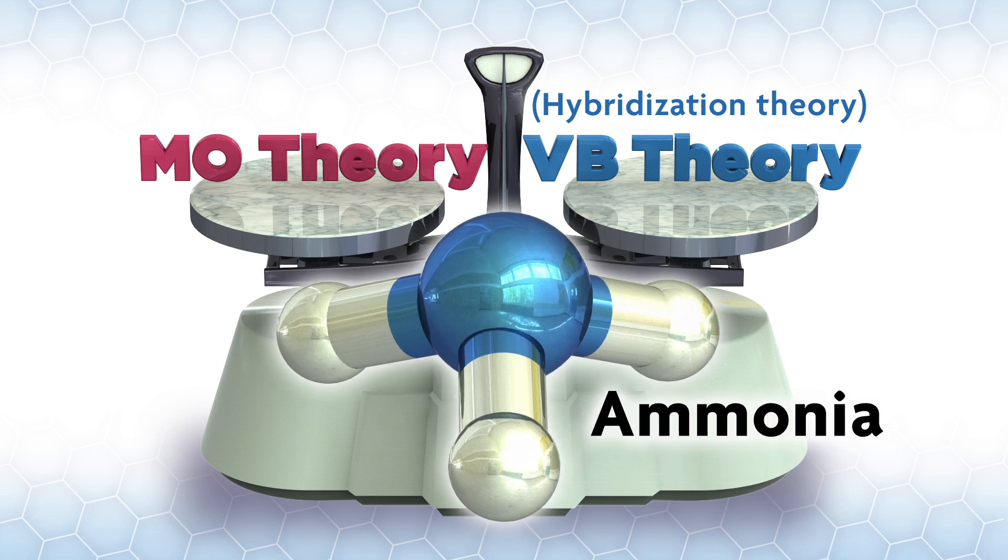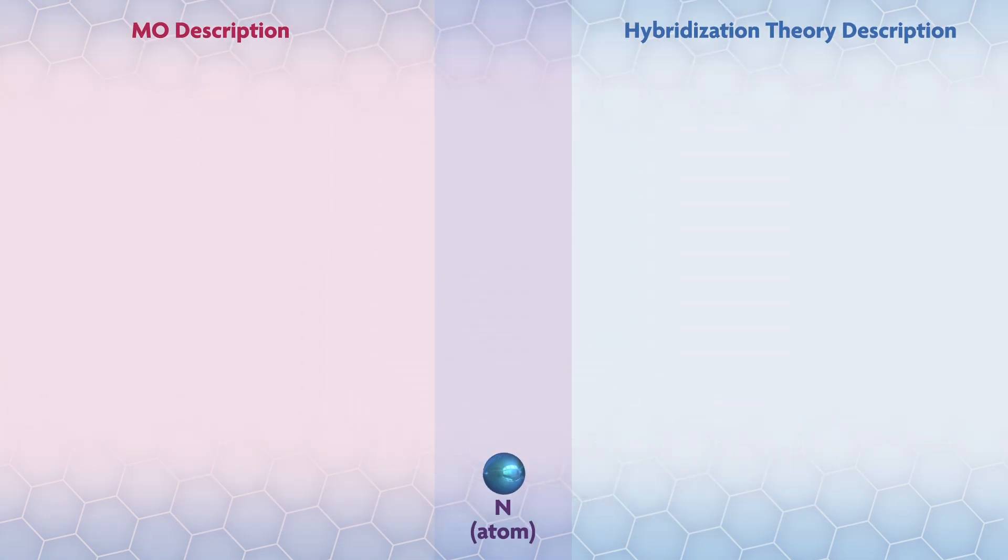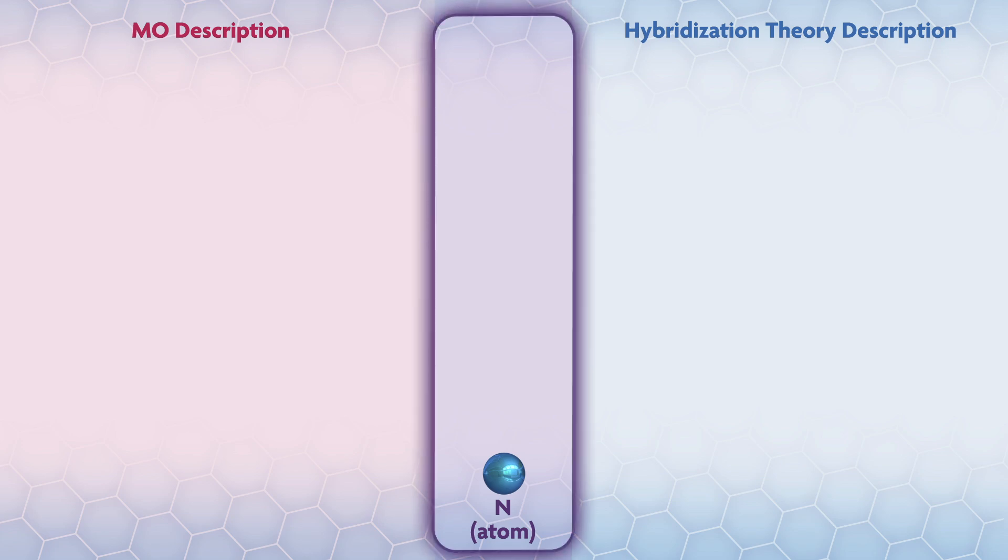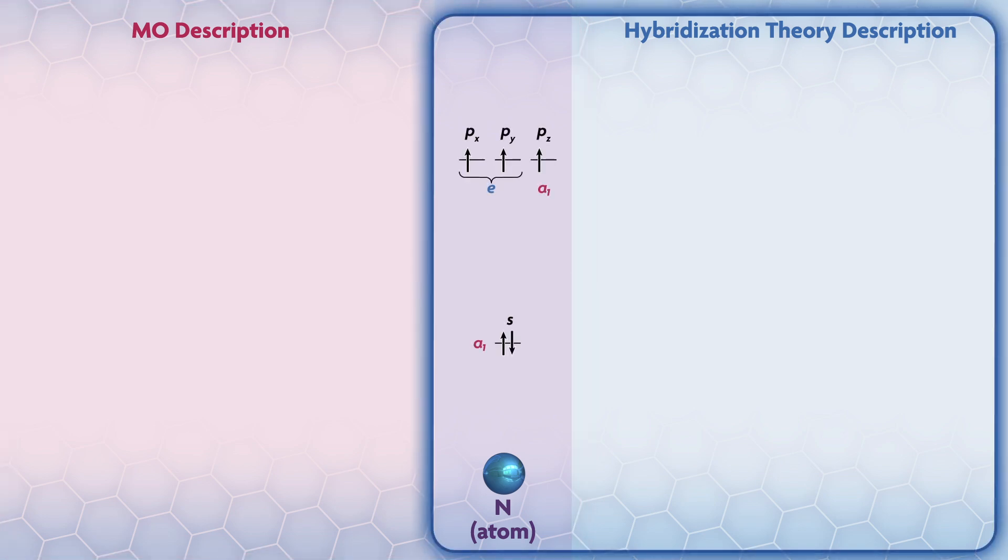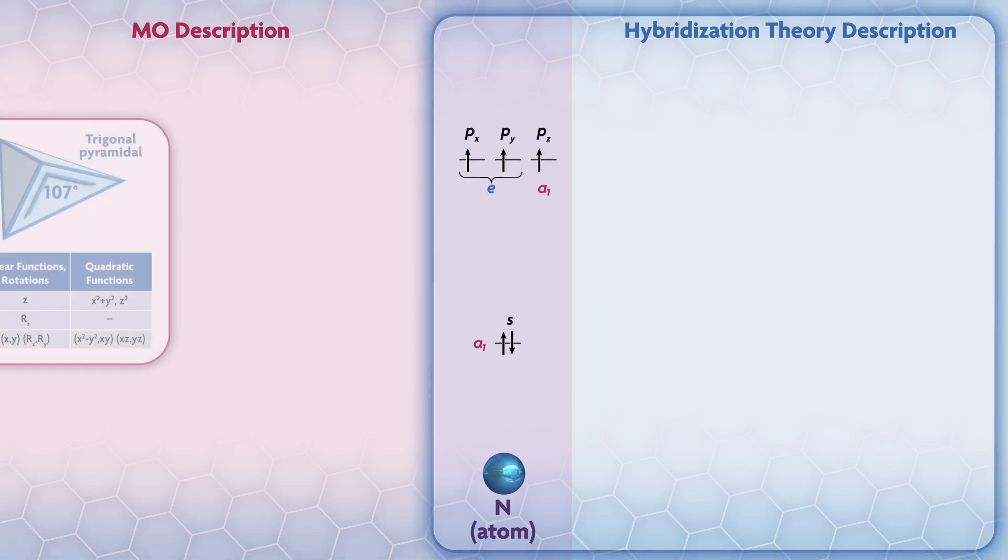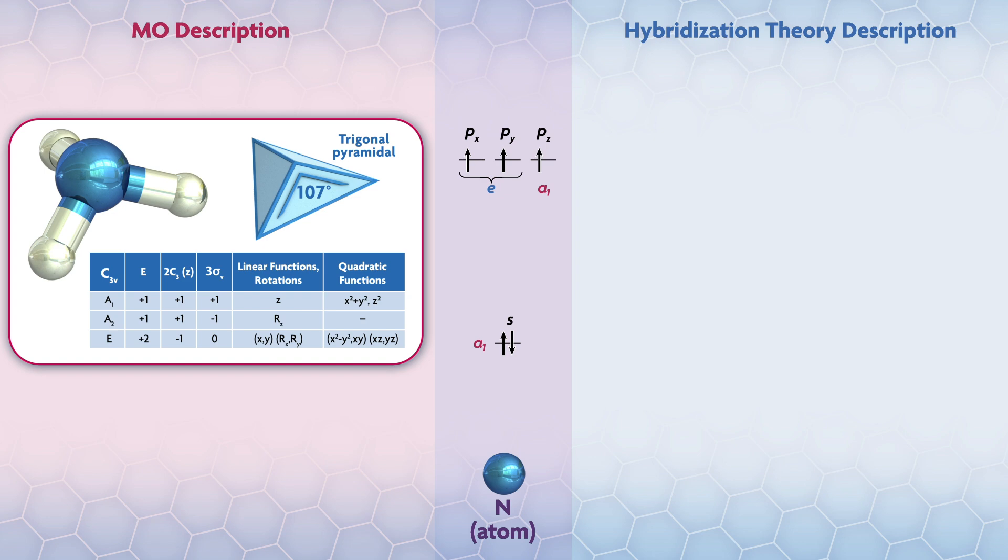We can start with the orbitals for nitrogen, which will be on one side of our diagram for both methods. Here we will put it in the middle and do MO theory to one side and hybridization theory on the other.